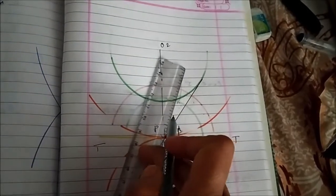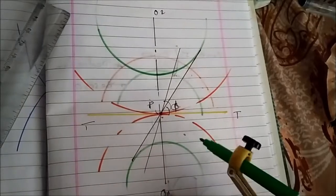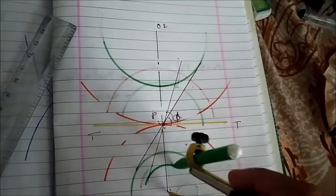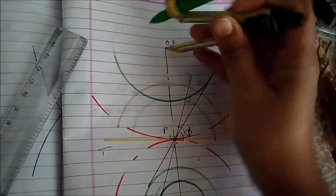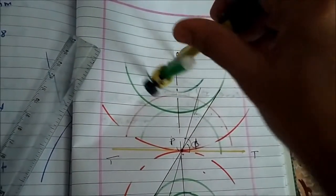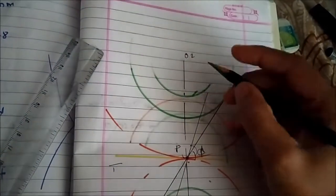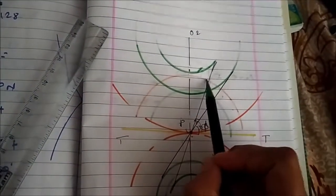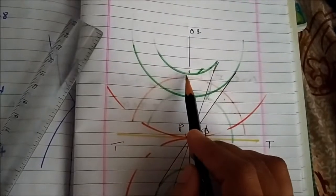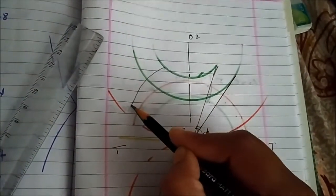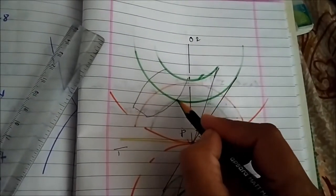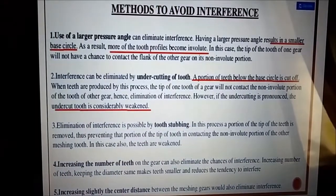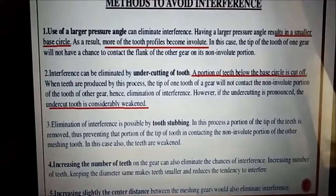The common normal is always the common tangent to the base circle. As we increase the pressure angle, we reduce the base circle. Similarly, we reduce the base circle for gear 2, so that the common normal becomes tangent to the base circle. If we increase the pressure angle, the base circle is reduced, and since the involute tooth profile exists above the base circle, reducing the base circle increases the involute tooth profile region. When the involute tooth profile increases, there is no interference.